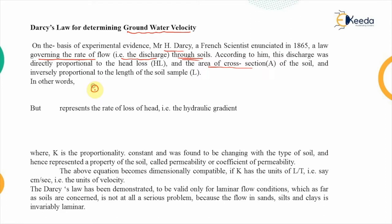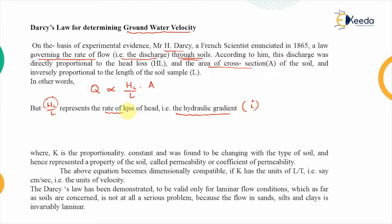If we write this mathematically, the discharge Q is proportional to the head loss HL times the cross-sectional area A, divided by the length of the soil sample L. The ratio HL upon L represents the loss of head per unit length, known as the hydraulic gradient, denoted by symbol I. So in place of HL upon L, we can write I, giving Q proportional to I times A.